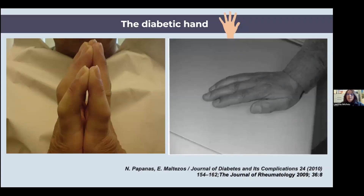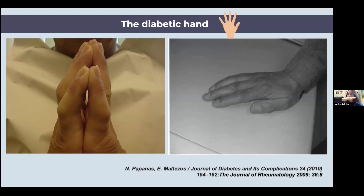The diabetic hand can be recognized with the prayer sign, represented here in the picture. Usually, we can do the prayer sign without any space between two hands. But people with diabetes, due to stiffness of the tendon, are not able to do the sign like this — there will be a space, or if you place your hand flat on the table as in the picture, there is a gap because of stiffness in the flexor tendon.